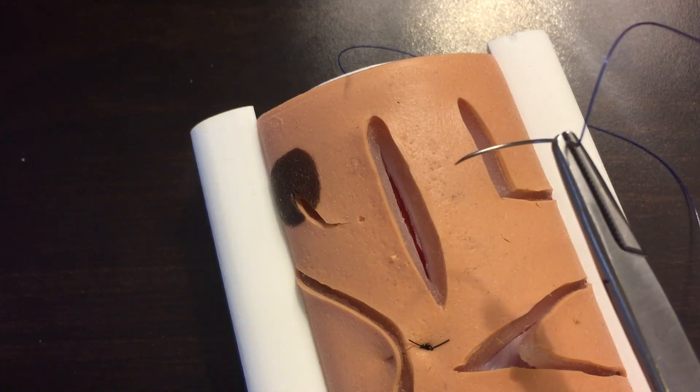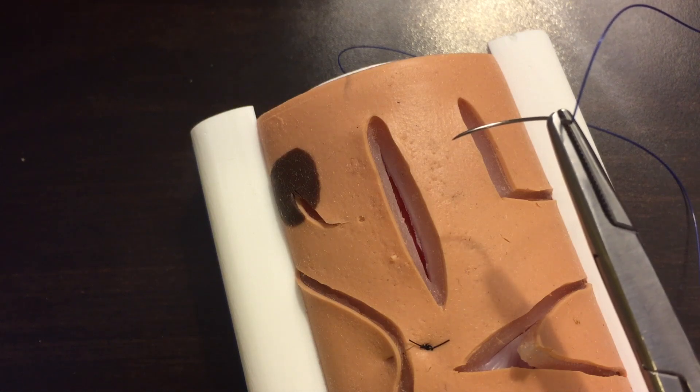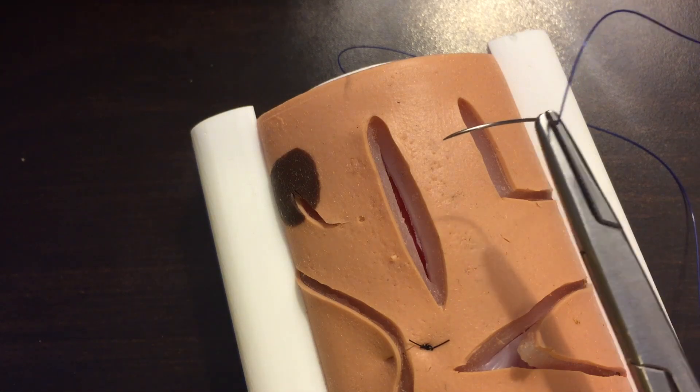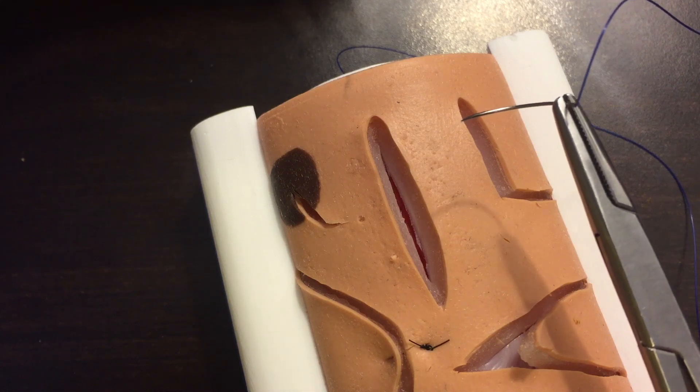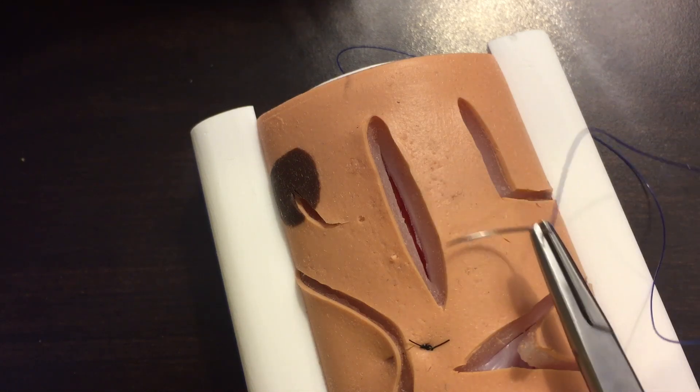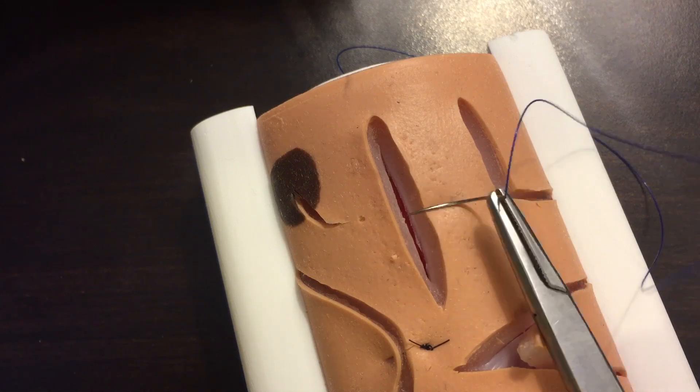Hey everyone, I'd like to demonstrate the horizontal mattress suture. It's very similar to the vertical mattress, however the way you place the suture is in two different planes rather than in one plane across the laceration.